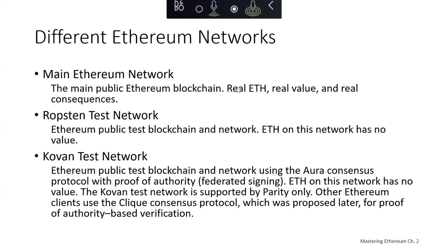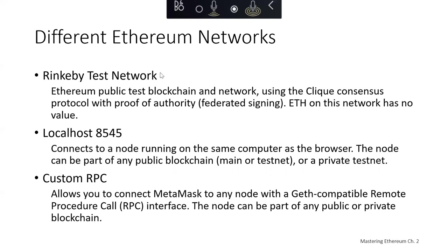Here's a look at some of these different networks. There's the main Ethereum network, which has real currency — if you lose your currency there, there are real consequences. There's the Ropsten test network, the Kovan test network, and the Rinkeby test network — none of these have any real value. You can also test on localhost or create your own connections using a custom RPC call.